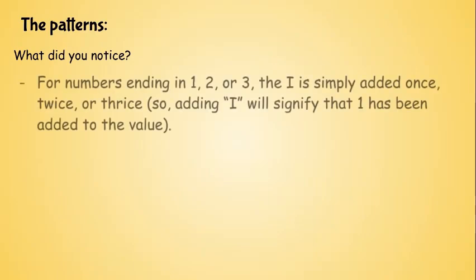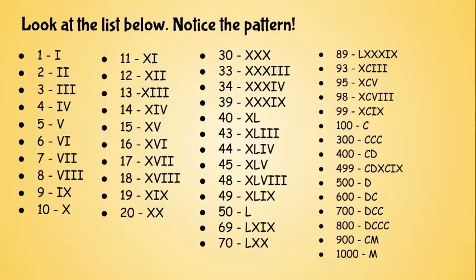The patterns. What did you notice? For the numbers ending in 1, 2, or 3, this I is simply added once, twice, or thrice. So adding the I will signify that 1 has been added to the value that is there. So if it's like 0 and if you just have like 1 like here, it just means that it's 1.